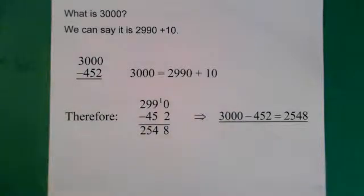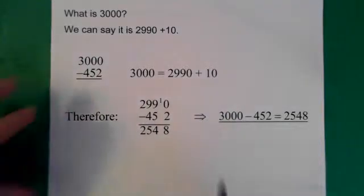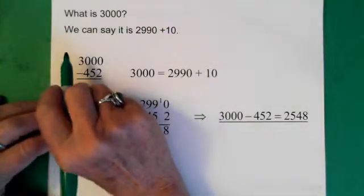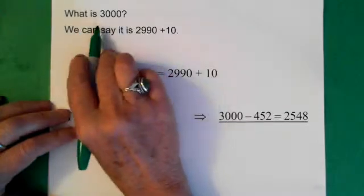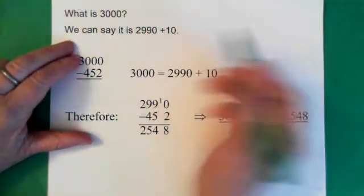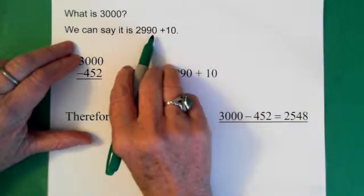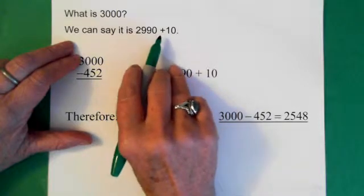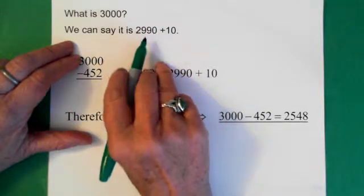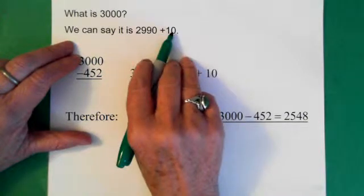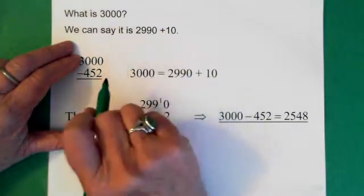Let's talk about what we're doing when we're subtracting from zero. We have to talk about numbers that have zeros in them. The question is, what is 3,000? We can say that it is 2,990 plus 10. This is the sort of thing that we use to subtract from zeros. We just pull out the 10 and we end up with numbers that we can subtract from.